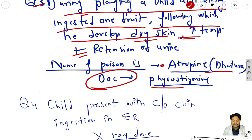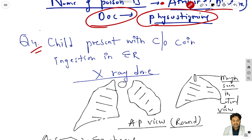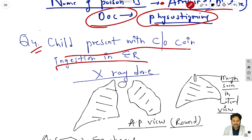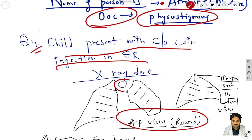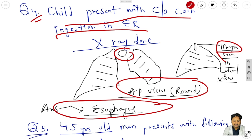Question 4: a child presents with complaint of coin ingestion in the ER. I just try to draw the X-ray. In the AP view, the coin is of rounded appearance. In the lateral view we see the margins of the coin - so the coin is in the esophagus.